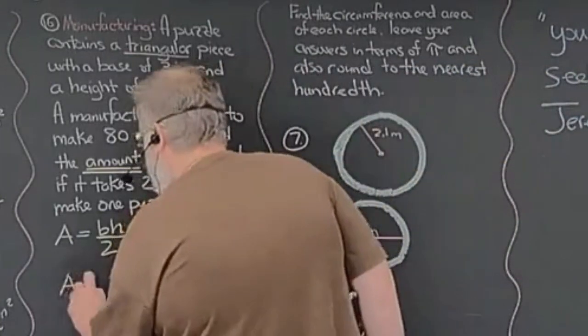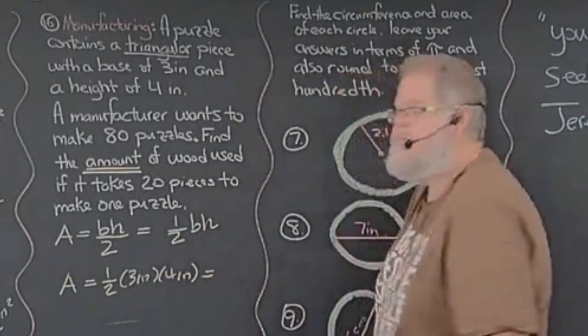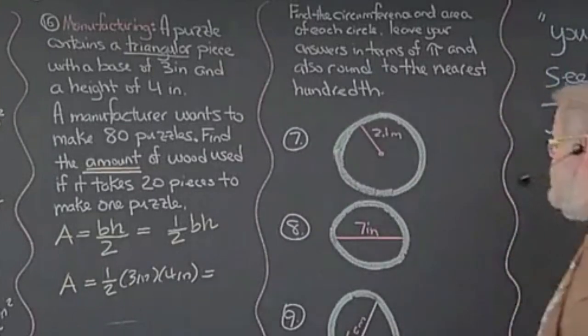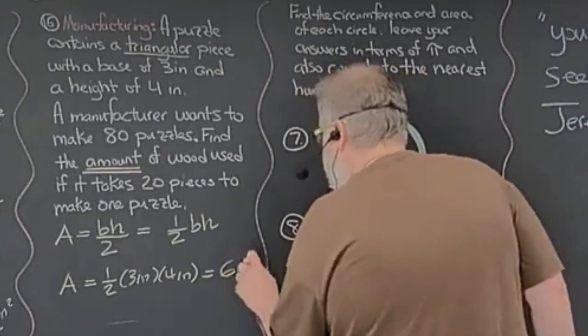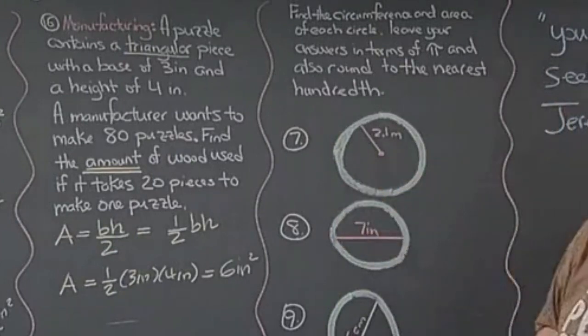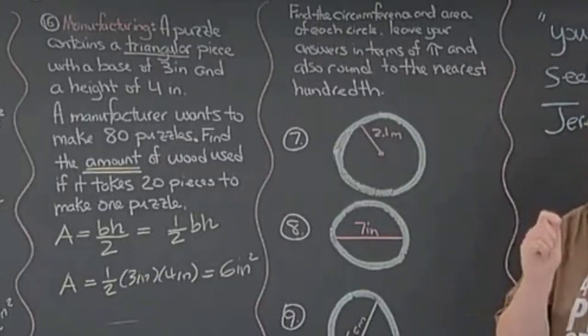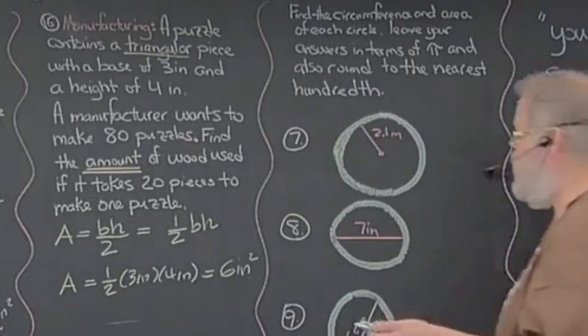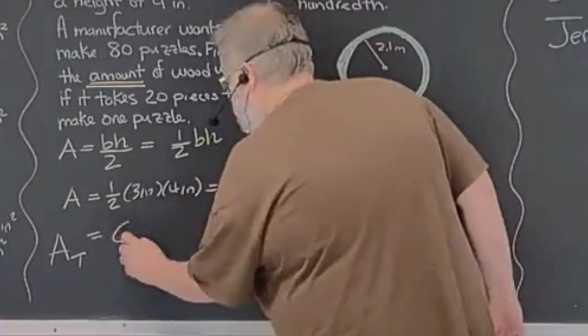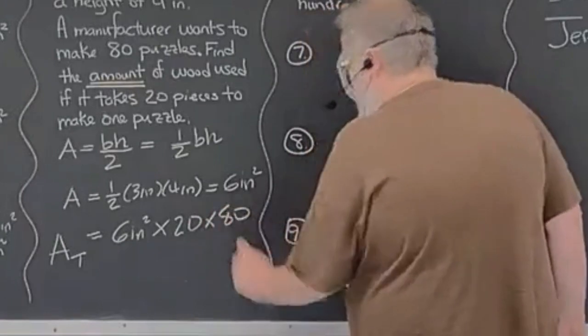The area formula for our triangle is base times height divided by 2, which by the way, you can also write it like this: one-half base height. I know the base is 3 and the height is 4. So the area is equal to one-half, 3 inches, times 4 inches. Remember the units are going to be inches squared. 3 times 4 gives me 12, and half of 12 is 6. So the area of one piece is 6 inches squared. Now the manufacturer wants to make how many puzzles? 80 puzzles. But how many pieces does it take to make one puzzle? 20.